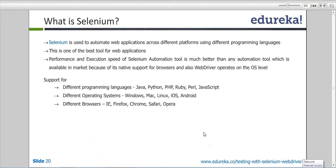So Selenium is used to automate only web applications. I'll repeat: Selenium is used to automate only web applications. There are many applications like desktop applications — SAP is also an application, there are many ERP tools, they are also a type of application.